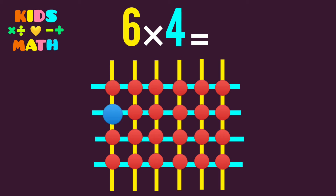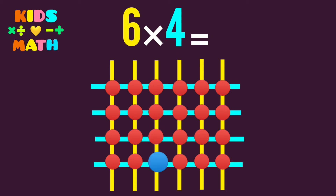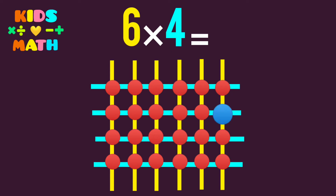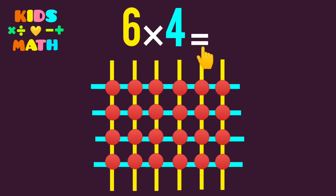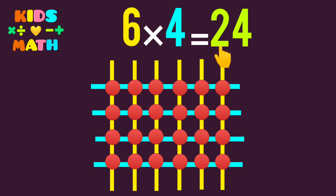We count: 1, 2, 3, 4, 5, 6, 7, 8, 9, 10, 11, 12, 13, 14, 15, 16, 17, 18, 19, 20, 21, 22, 23, 24. So 6 times 4 equals 24.